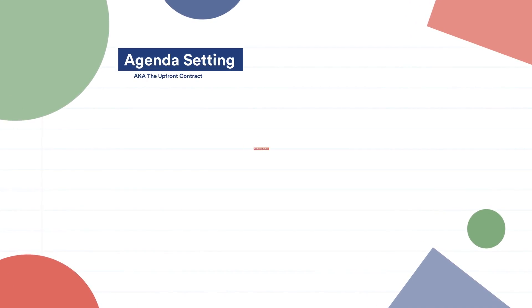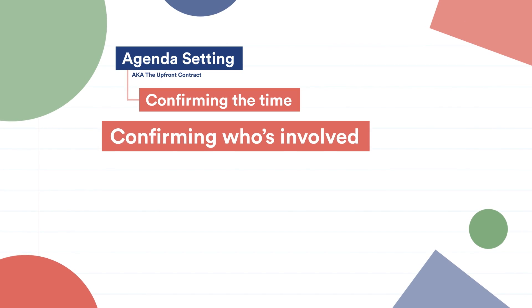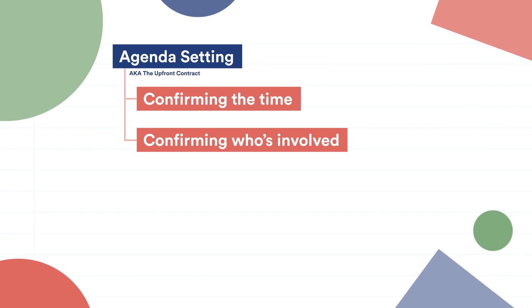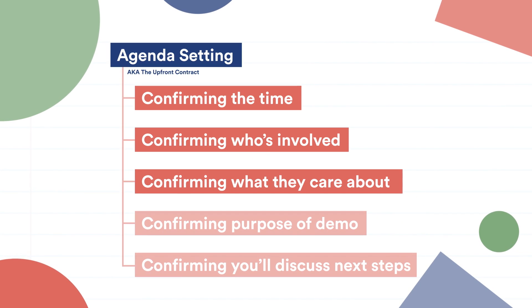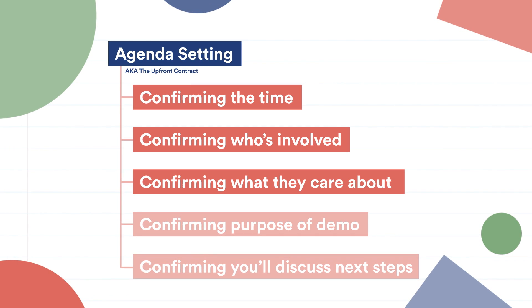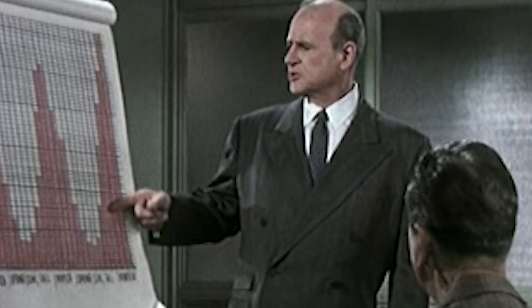A really good agenda might be something like this: confirming the time, confirming who's involved from their side and letting anyone new to the conversation make their introduction, and confirming what they care about. Here's how we got here — person X at your company came to me and said these are some of the challenges you guys are facing. This is a great time to show your recap slide: their overarching goals, objectives, and why we're even talking today. This is also a great opportunity to do more discovery, especially with new stakeholders. Ask them: would you make any changes to that before we start? Is it okay if I spend the demonstration talking about how those things could be addressed using our product?